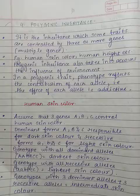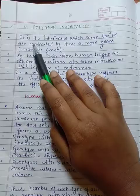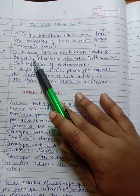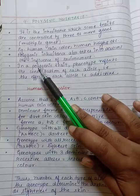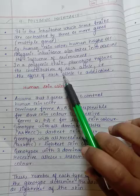Next is Polygenic Inheritance. It is the inheritance with some traits controlled by three or more genes, multiple genes. Examples: human skin color, human height. Polygenic inheritance also takes into account the influence of environment. In a polygenic trait, the phenotype reflects the contribution of each allele. That is, the effect of each allele is additive.